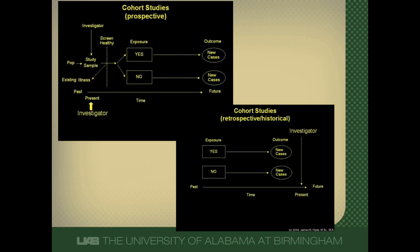Retrospective cohort studies are often done within other studies that have already been completed, where the data is just sitting there. You can go back and break people up into exposed and unexposed groups depending on your exposure of interest. Those are probably the two most common reasons you'd see a retrospective cohort study. It's still designed the same way — broken up on exposure status and followed forward for the development of disease.